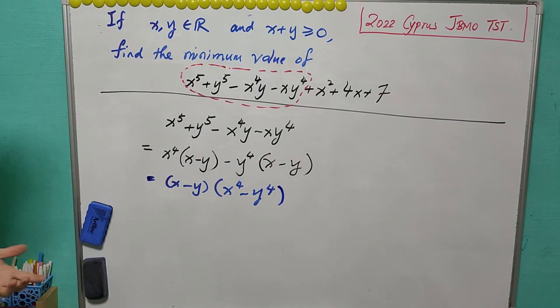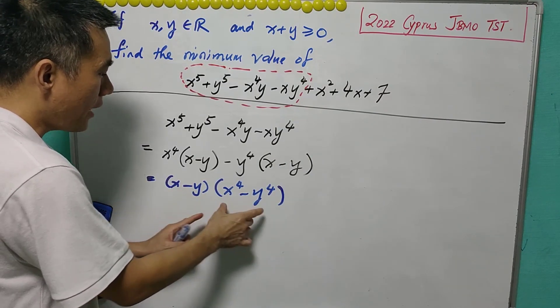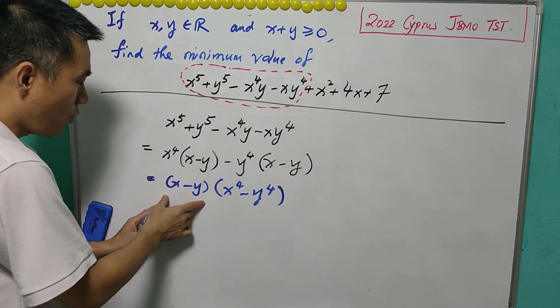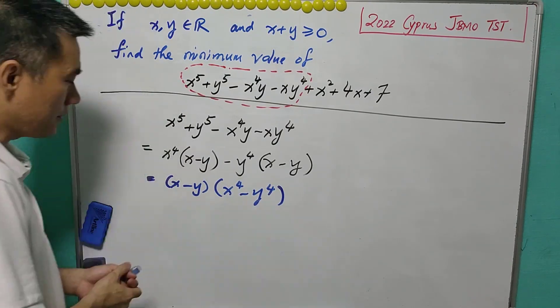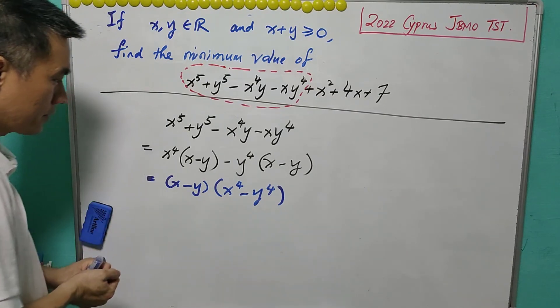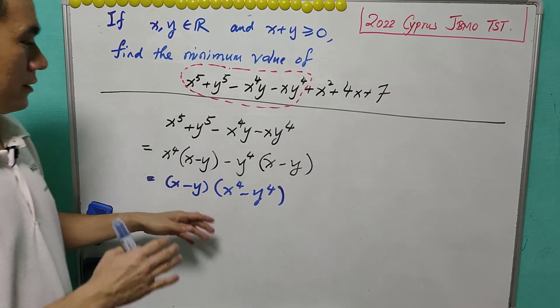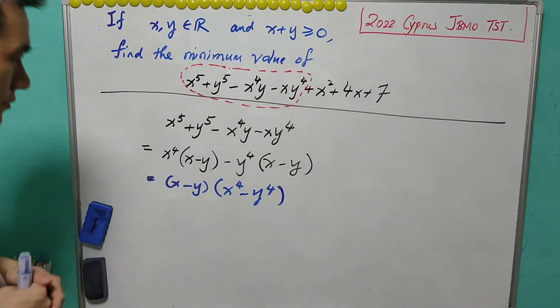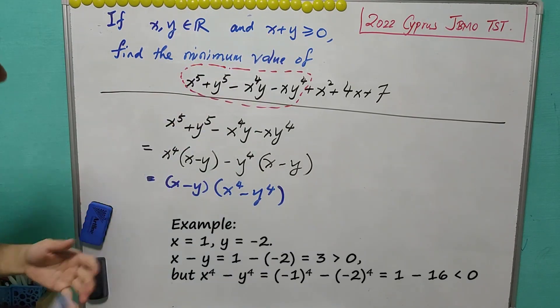Now some claim that if x is greater than y, then this is positive. And x^4 minus y^4 also positive. If x is less than y, x^4 also less than y^4. So in any case, this is positive. Now this may not be true because the previous argument only true if both x, y are positive. But now some of them can be negative. So it may not be valid.